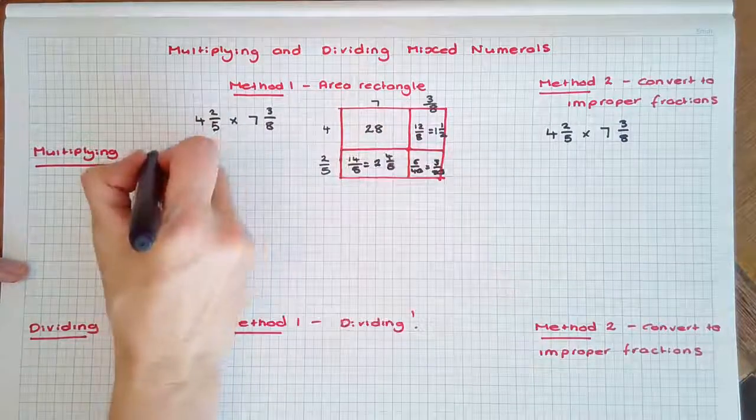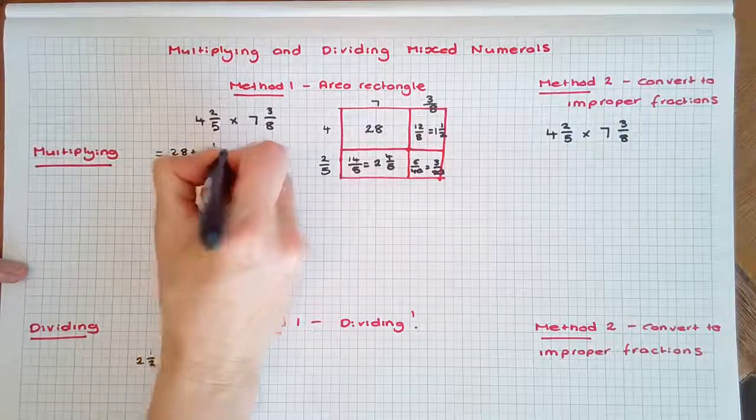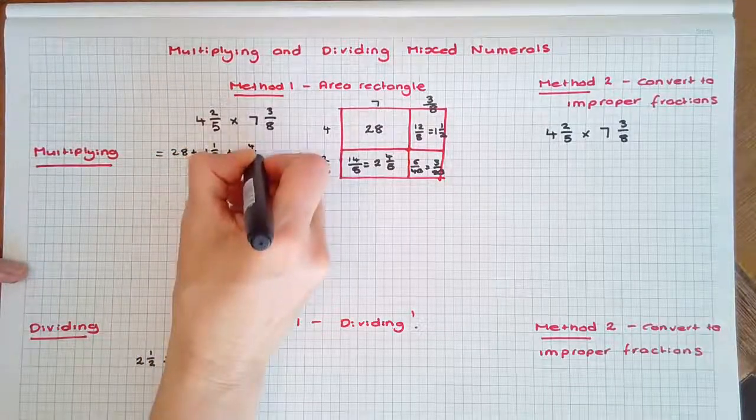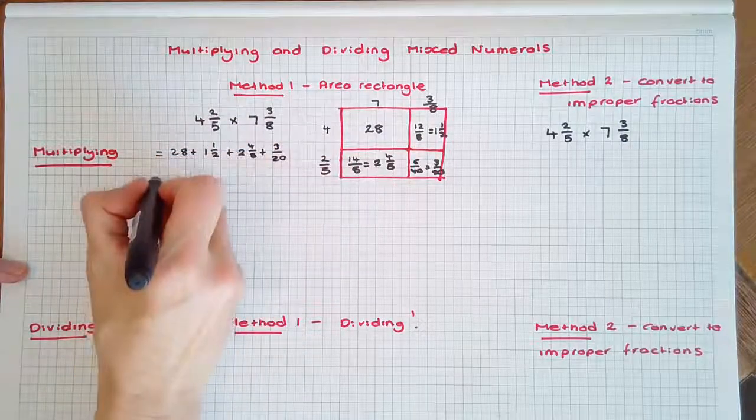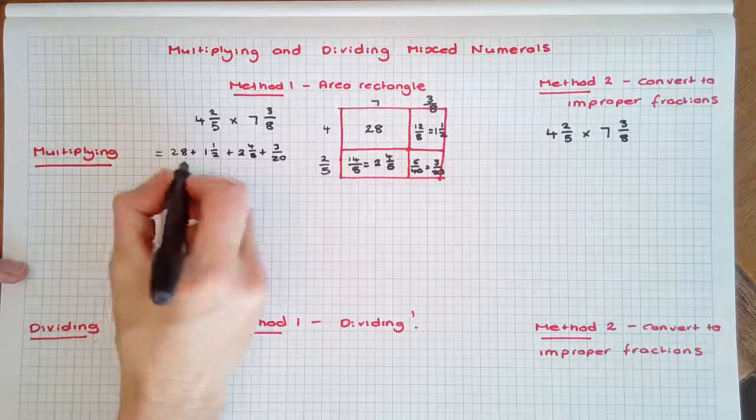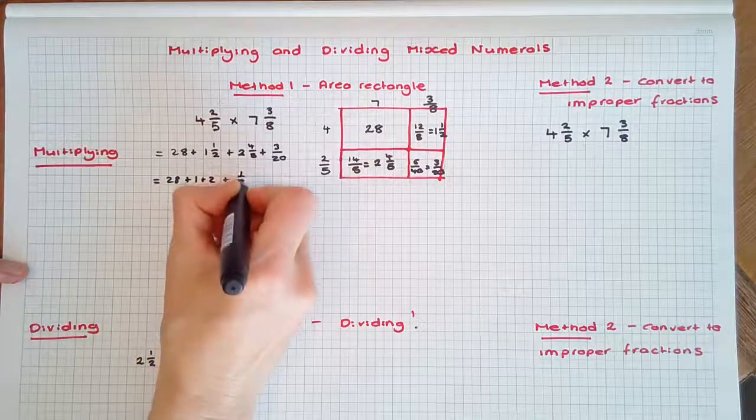We can simply add them up, so we have 28 plus 1 1/2 plus 2 4/5 plus 3/20. Let's rearrange to have all the whole numbers first: 28 plus 1 plus 2, plus all the fractions.